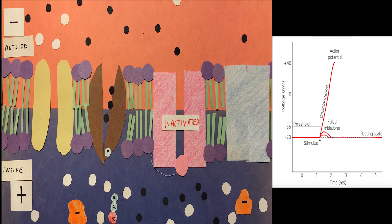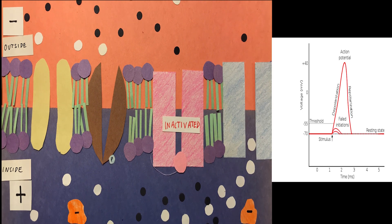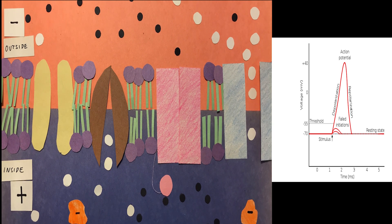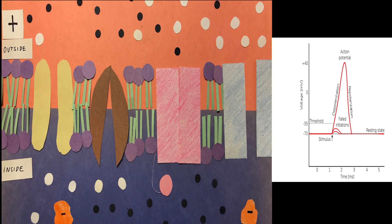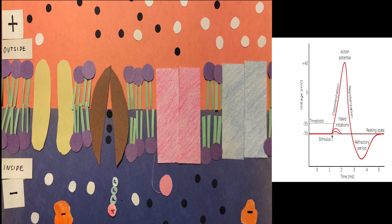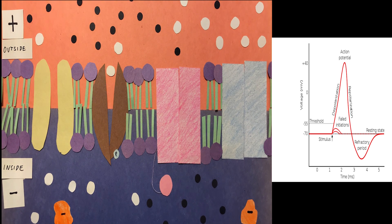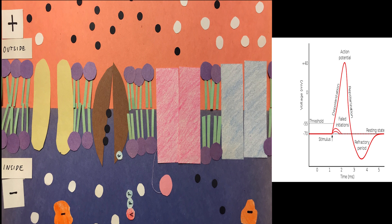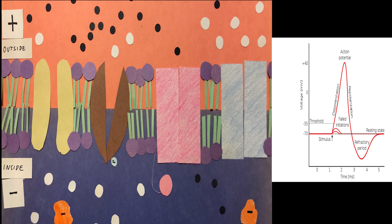The neuron is depolarized. Then, the voltage-gated potassium channel opens. Potassium rushes out of the cell, the sodium channel finally closes, and the cell is repolarized. The outside of the cell becomes positive again and the inside negative. Sometimes too much potassium rushes out of the cell, causing hyperpolarization, but with the sodium potassium pump, the membrane potential will eventually be brought back to its resting state of negative 70 millivolts.